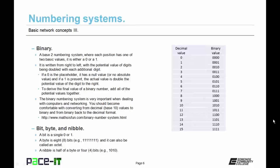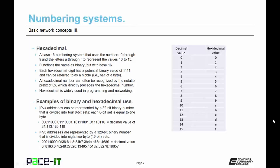Now let's talk about bit, byte, and nibble. A bit is a single zero or one. A byte is eight bits, and it can also be referred to as an octet. A nibble is half of a byte, or four bits, and these terms are used quite frequently when dealing with binary.